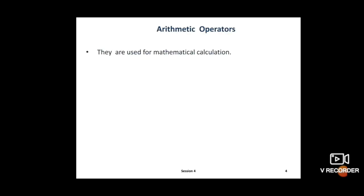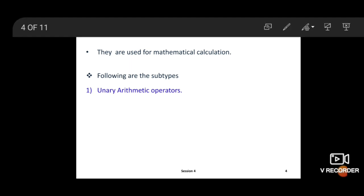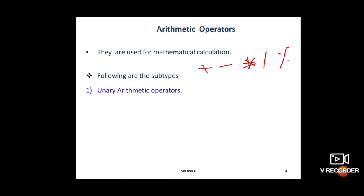Arithmetic operators are used for mathematical calculations. According to the name, it is clear that in math calculations or math programs we need these operators. Arithmetic operators include: plus, minus, star (multiplication), slash (division), and percent (modulus). Arithmetic operators are again divided into three subtypes: first, unary arithmetic operator; second, binary arithmetic operator; and third, ternary arithmetic operator.